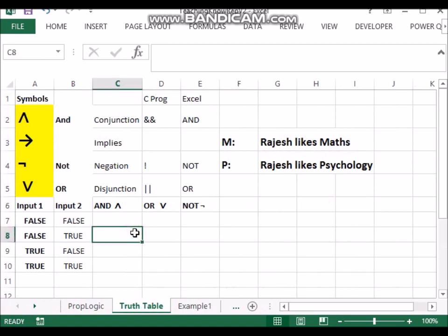And truth table is basically related to operations like and, or. So suppose I say Rajesh likes maths. So that is one statement I am making, it's a proposition I am making.